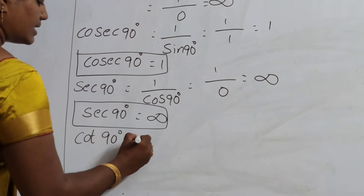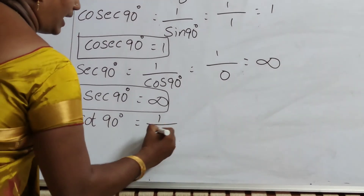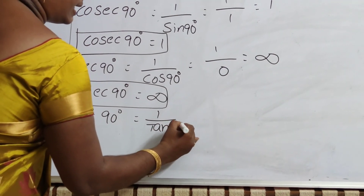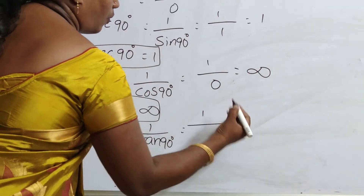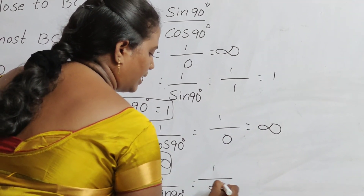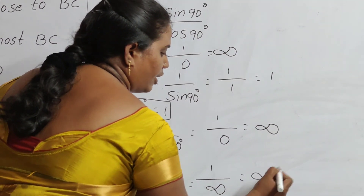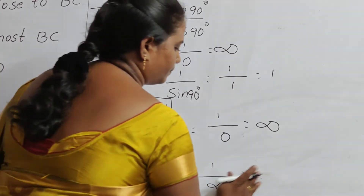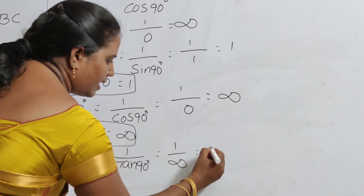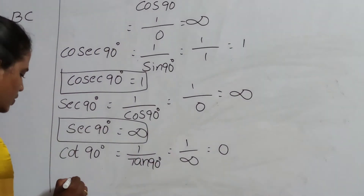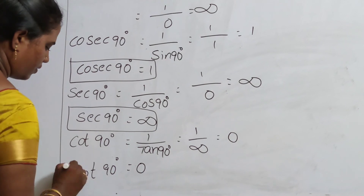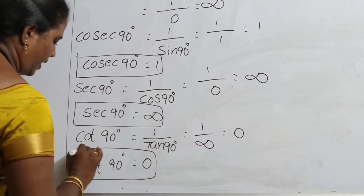Cot 90 degrees equals 1 by tan 90 degrees. Since tan 90 is infinity, 1 by infinity equals 0. So cot 90 degrees equals 0. We have now discussed all geometric proofs of the trigonometric ratios.